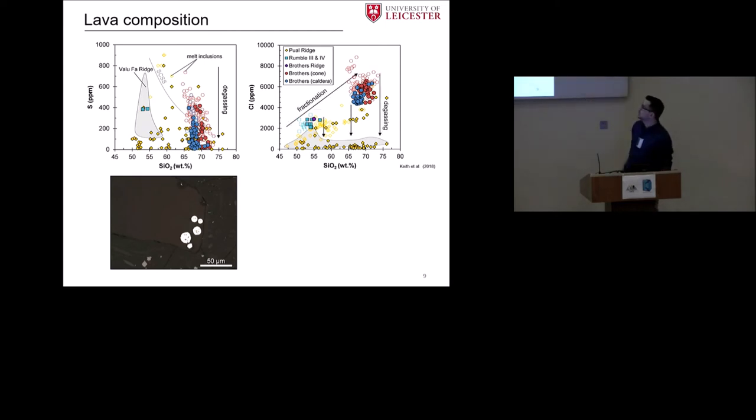When we look now on chlorine, we see there are like two distinct trends. One would be like a normal incompatible behavior during fractionation. Then we also see that we have variations in chlorine at a given silica content. Also higher chlorine in the melt inclusions compared to the glass data. This means there may also be a chlorine loss by a volatile phase.